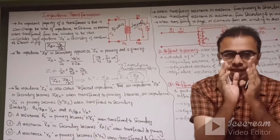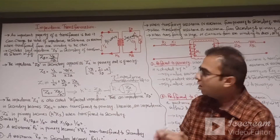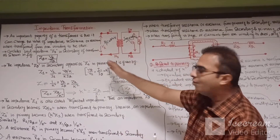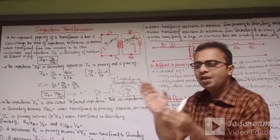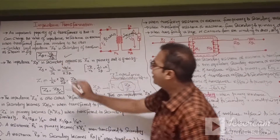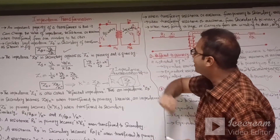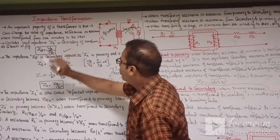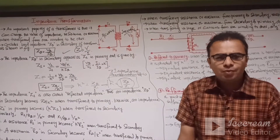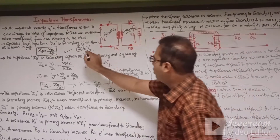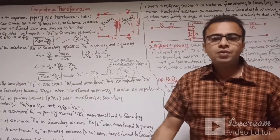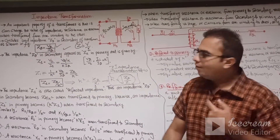Another property of the transformer is that it can also transfer or change the impedance value from one winding to another — meaning the impedance value can be changed from the primary winding to the secondary winding. If you are connecting the Z2 impedance on the secondary side, I2 current will be flowing. According to Ohm's law, Z = V/I. So the impedance on the secondary side will be Z2, calculated as V2 divided by I2.